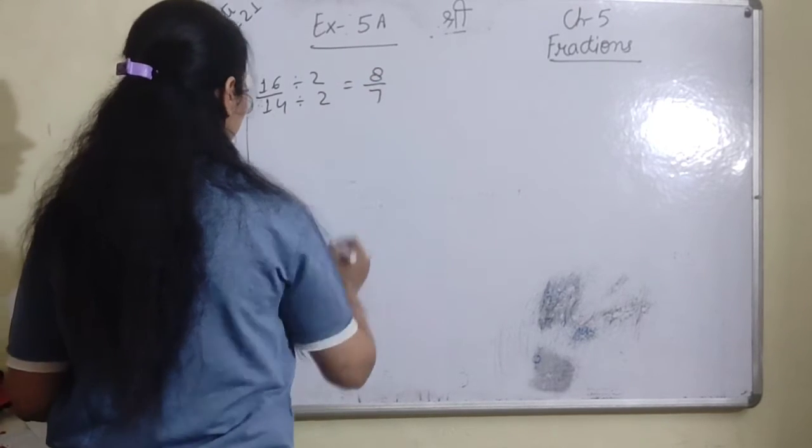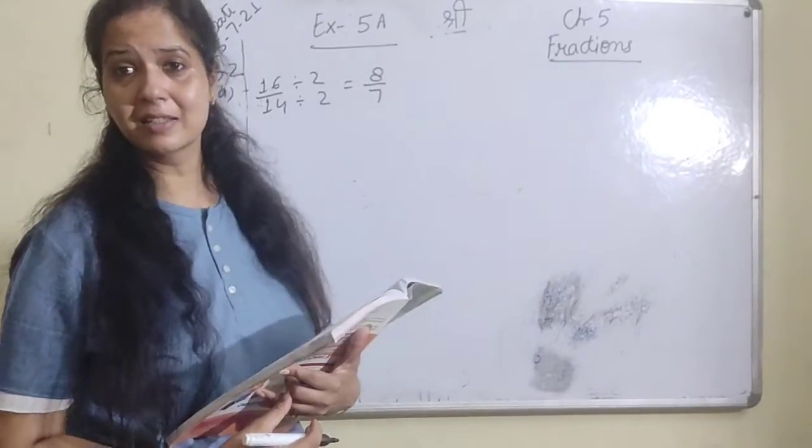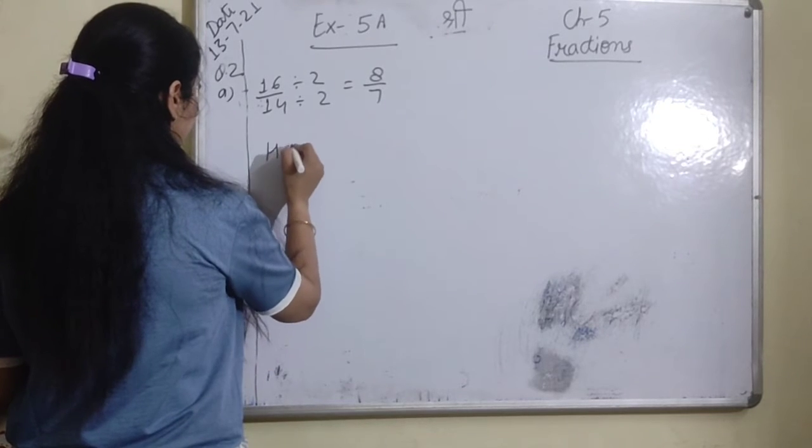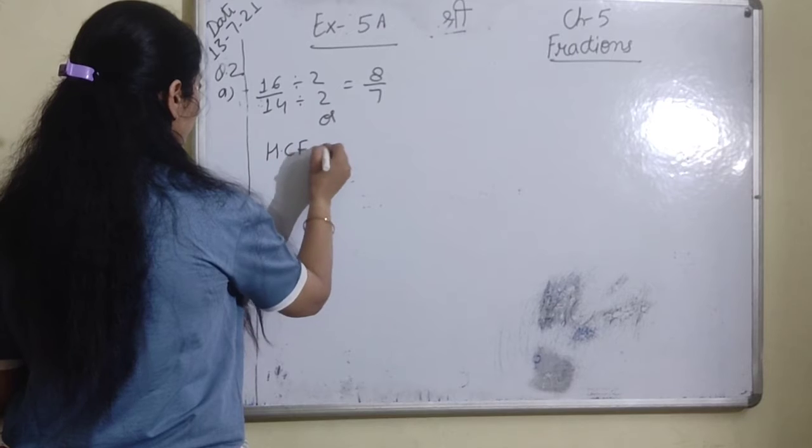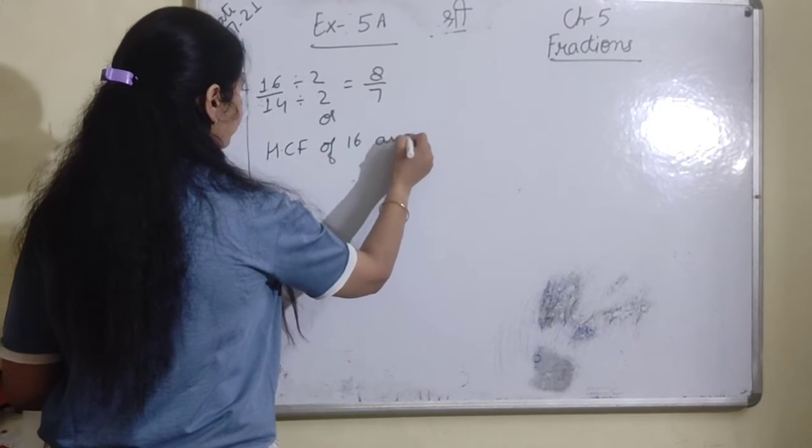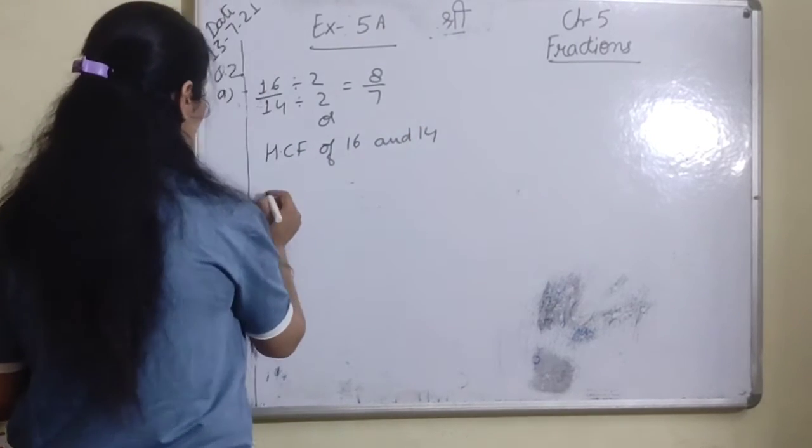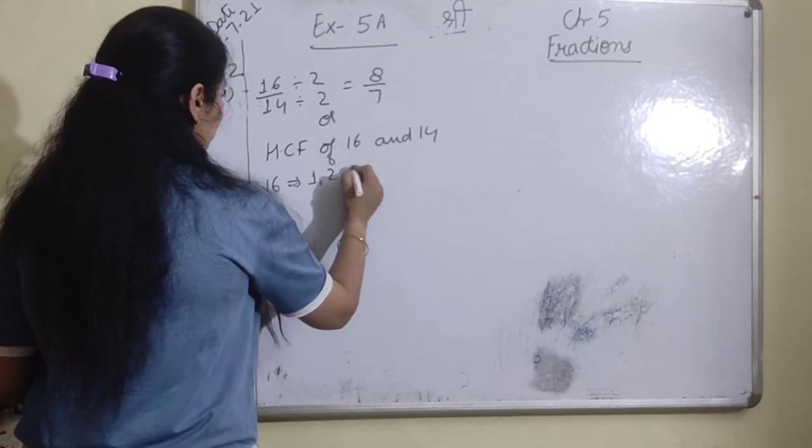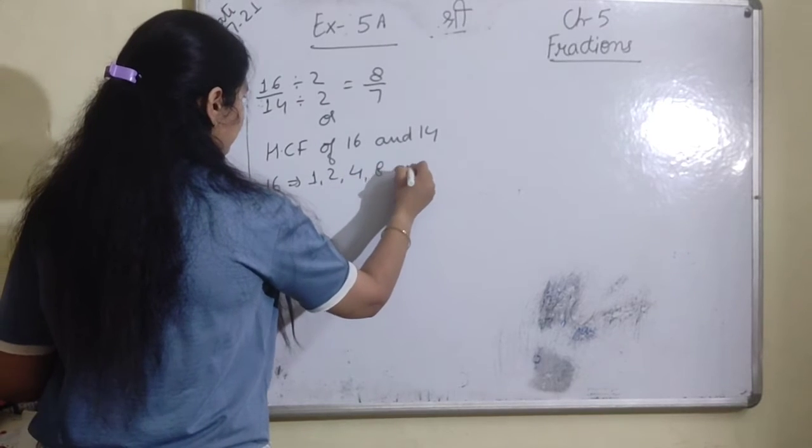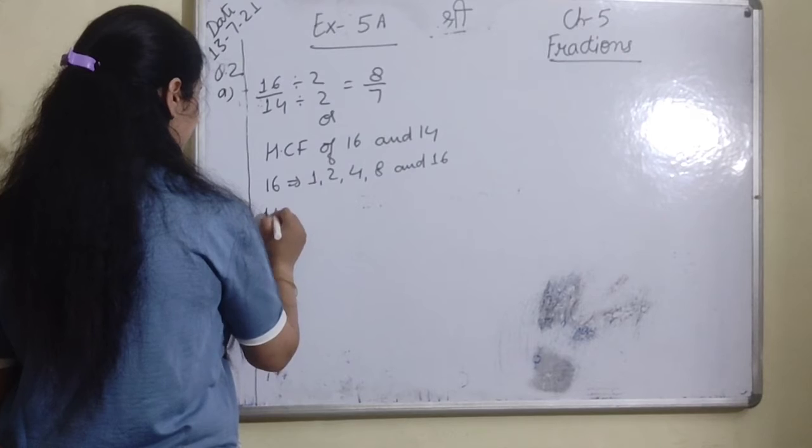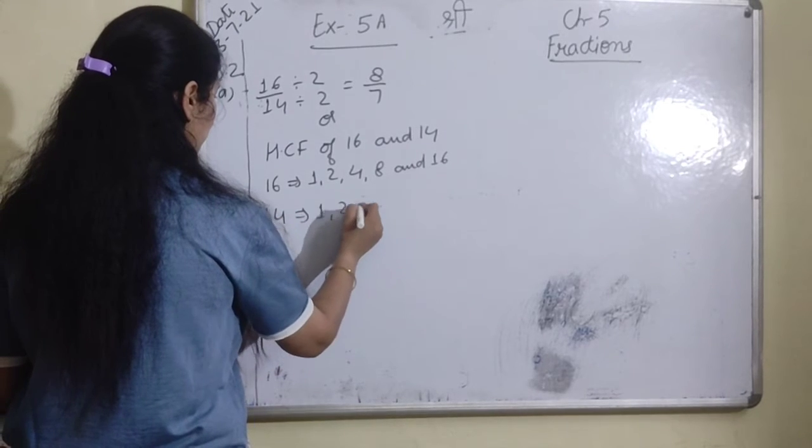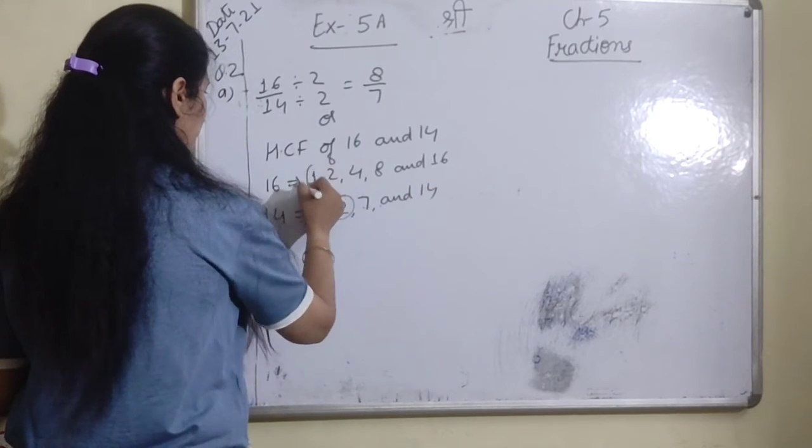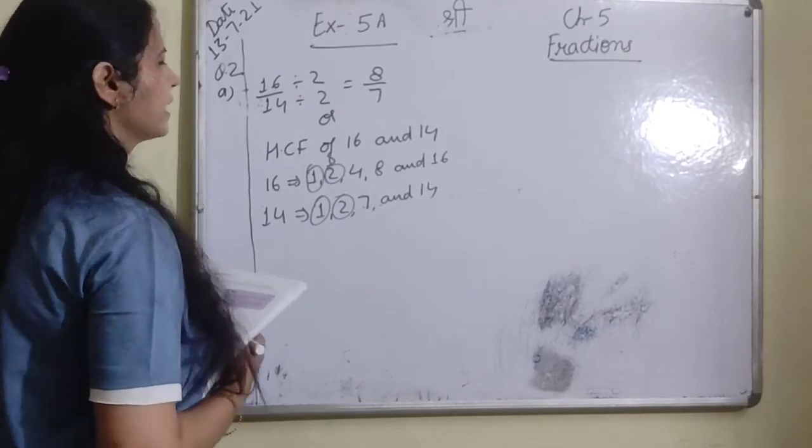8 upon 7. I am writing the steps. In 16, factors are 1, 2, 4, 8, and 16. In 14, factors are 1, 2, 7, and 14. What is the same factor? 2. We divide by it. Then 8 upon 7.